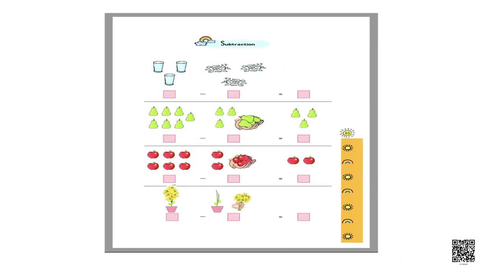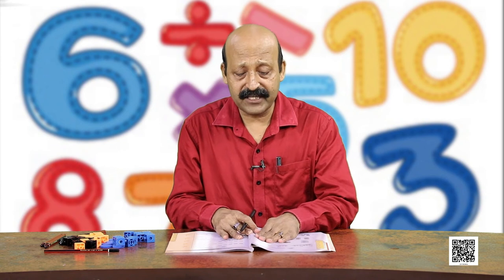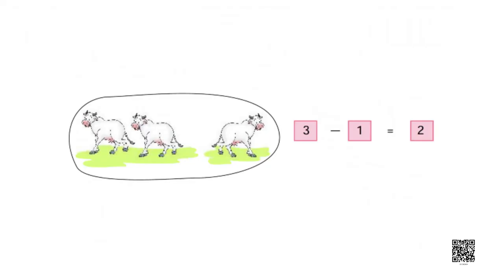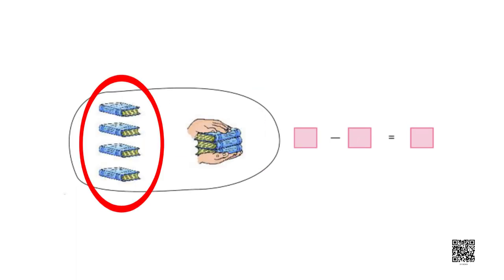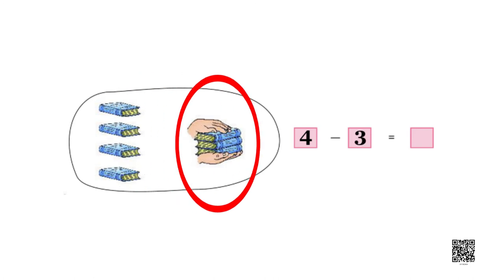Now your turn - you have to write it down. There were total 3 cows and one has gone away - how many are left? 2. Similarly here: 1, 2, 3, 4 - there are 4 notebooks, out of which 3 have been taken away. In this hand I can see 1, 2, 3 - 3 have been taken away. How many are left? 1 is left.